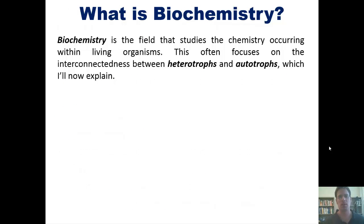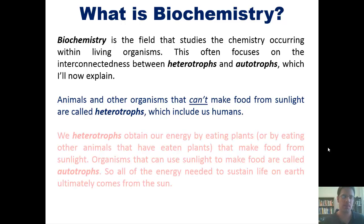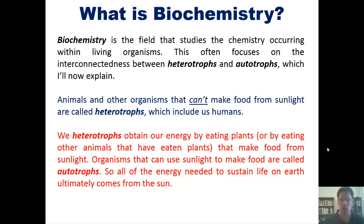Beginning with the definition of biochemistry: biochemistry is the field that studies the chemistry occurring within living organisms. This often focuses on the interconnectedness between heterotrophs and autotrophs. Animals and other organisms that can't make food from sunlight are called heterotrophs, which include us humans. We obtain our energy by eating plants or by eating other animals that have eaten plants. Organisms that can use sunlight to make food are called autotrophs. All the energy needed to sustain life on Earth ultimately comes from the sun.